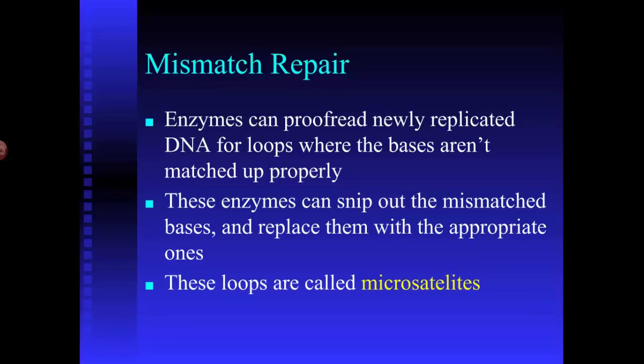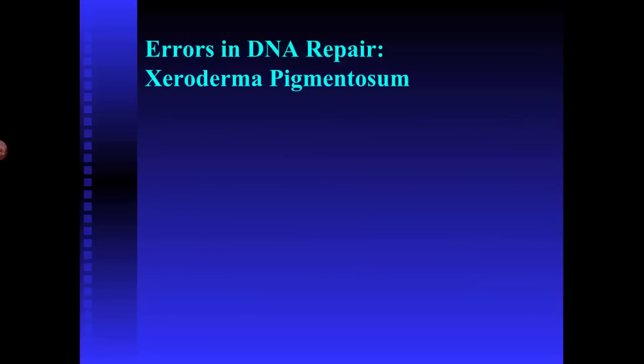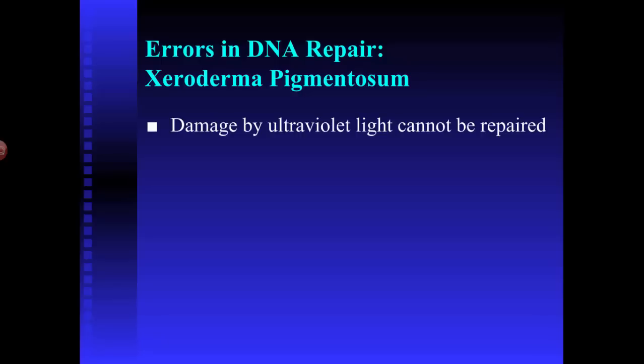We can also do mismatch repair after DNA replication, in case there are some mismatched bases. Now, if your DNA repair isn't working, there are a number of different conditions you could end up with. One of the more interesting ones is something called xeroderma pigmentosum. This is a situation where the excision enzymes that cut out thymine dimers caused by ultraviolet radiation don't work, meaning you can't repair the damage done by ultraviolet radiation.